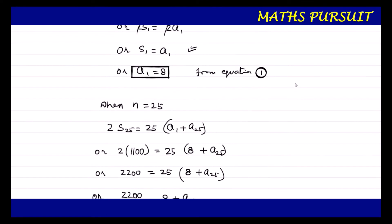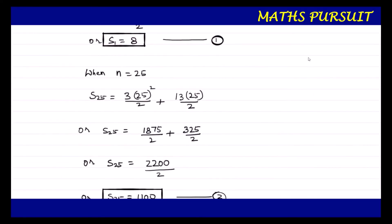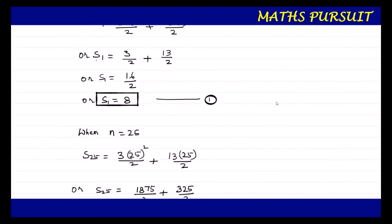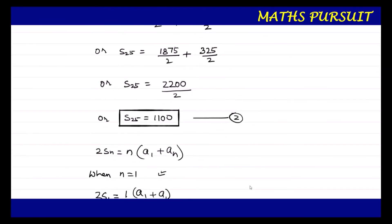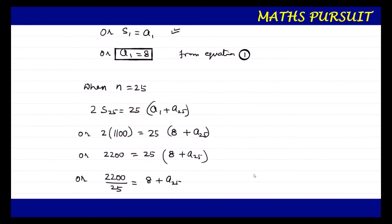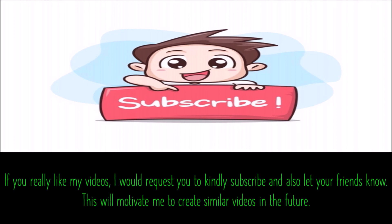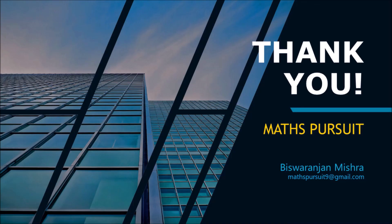We fulfilled everything and found that a25 = 80. Hope you understood the steps and process I followed to find the value for a25. If you still have any questions or doubts, please reach out to me in the comment section — I will definitely get back to you. If you like my videos, please subscribe and let your friends know. This will motivate me to create similar videos in the future. Thank you. Bye.